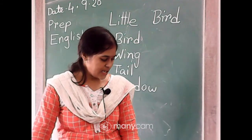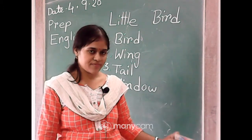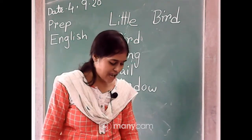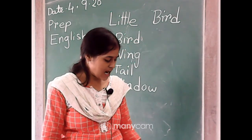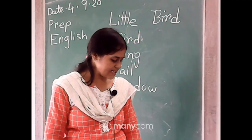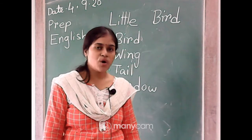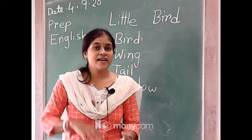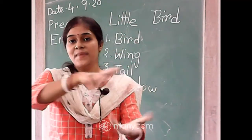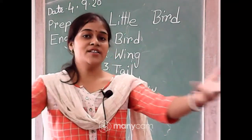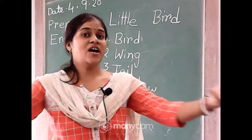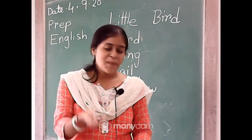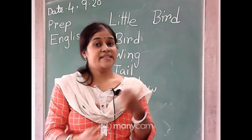Now revise our rhyme again — revise the rhyme which you have learned in your previous class. Okay — bits of paper. We will revise 'Bits of Paper' now. Start: Bits of paper, bits of paper, lying on the floor, lying on the floor. Make the place untidy, make the place untidy. Pick them up, pick them up.